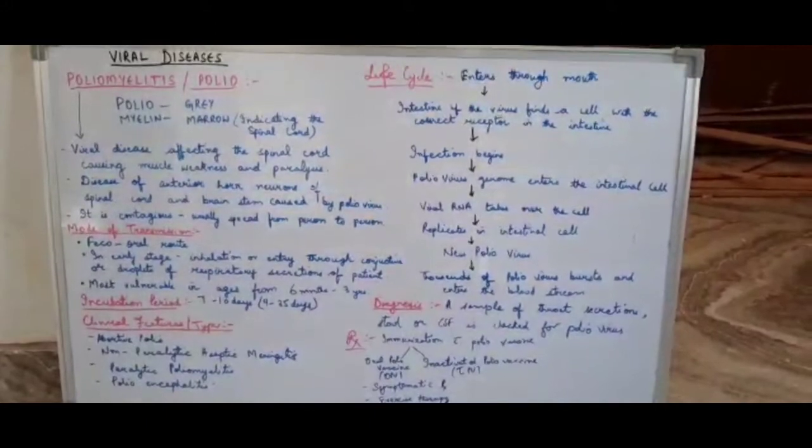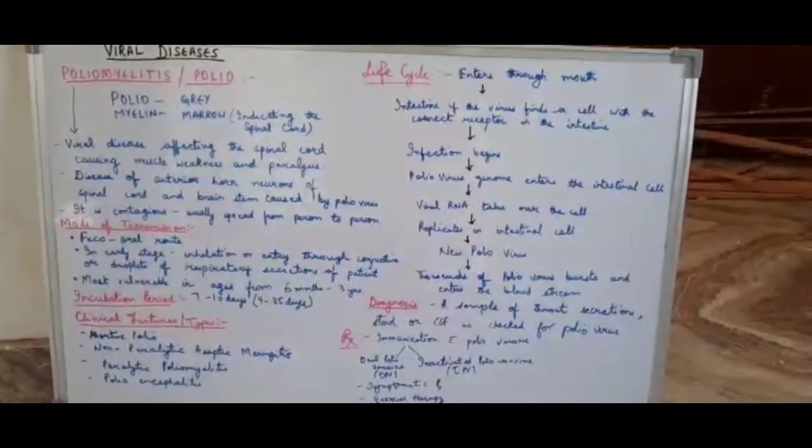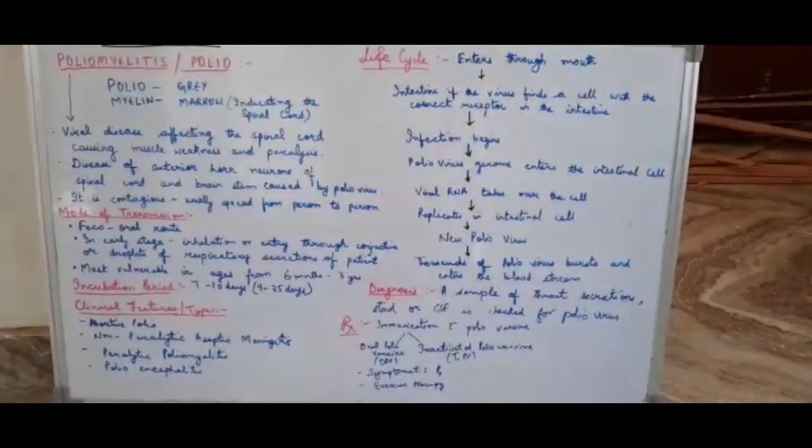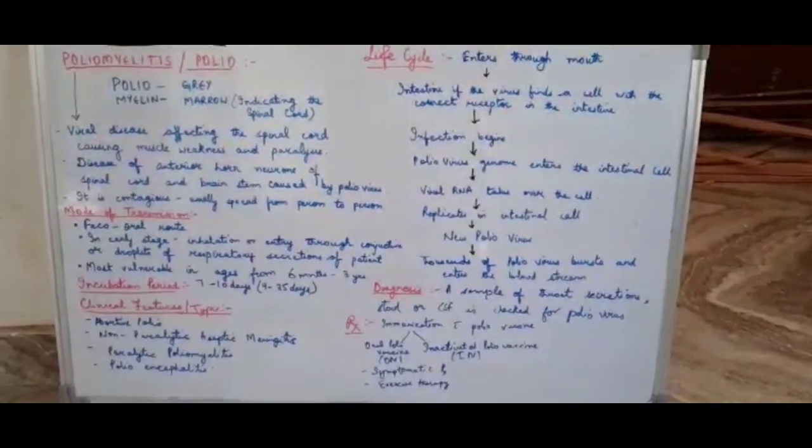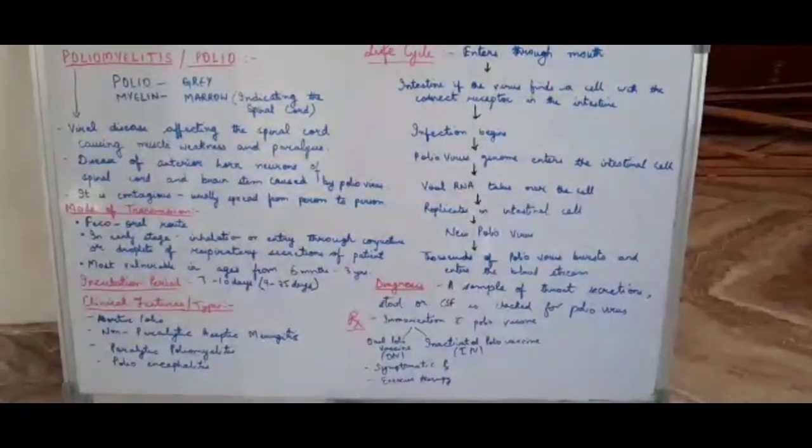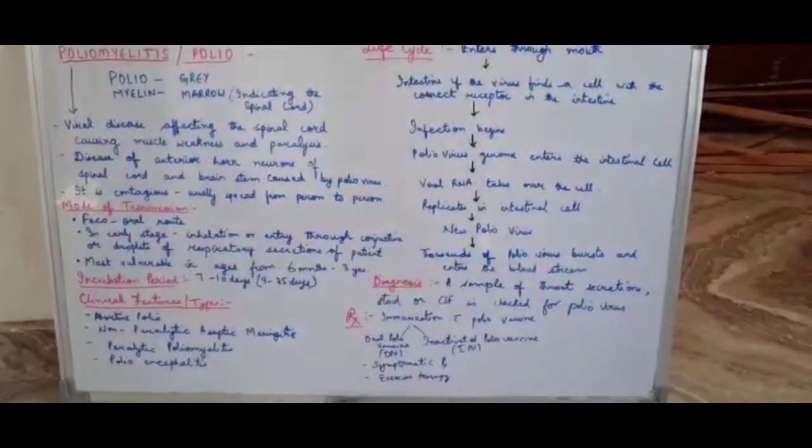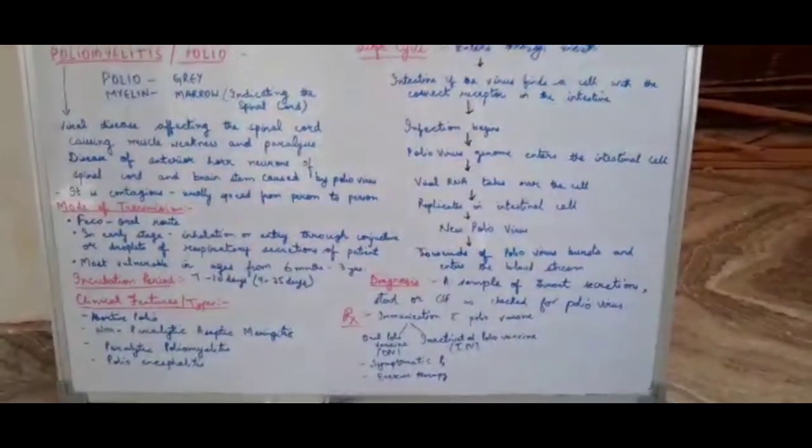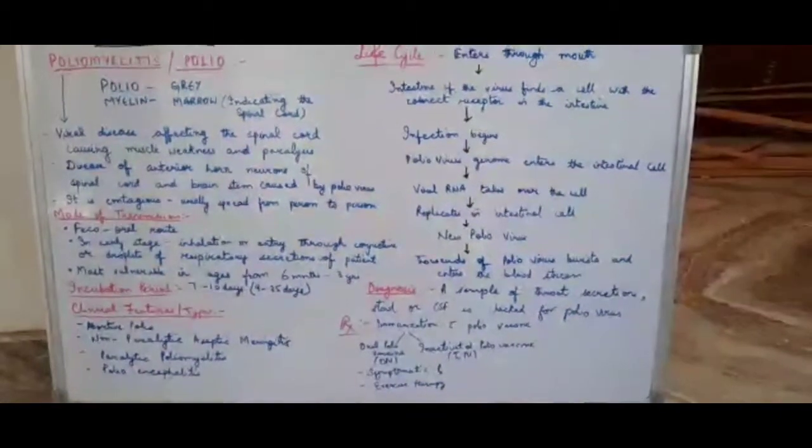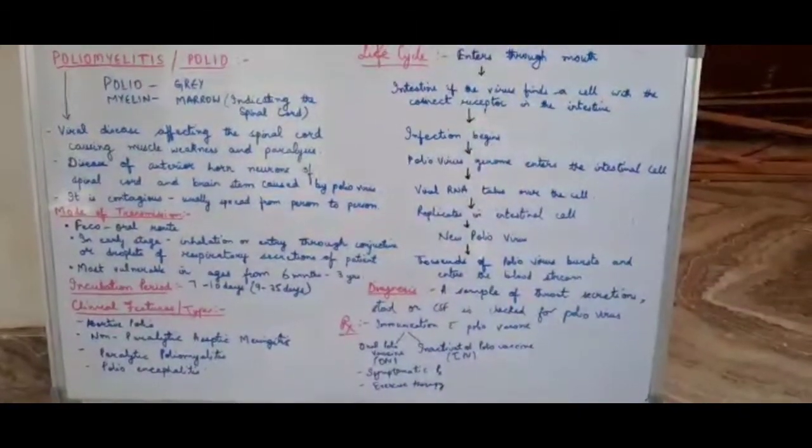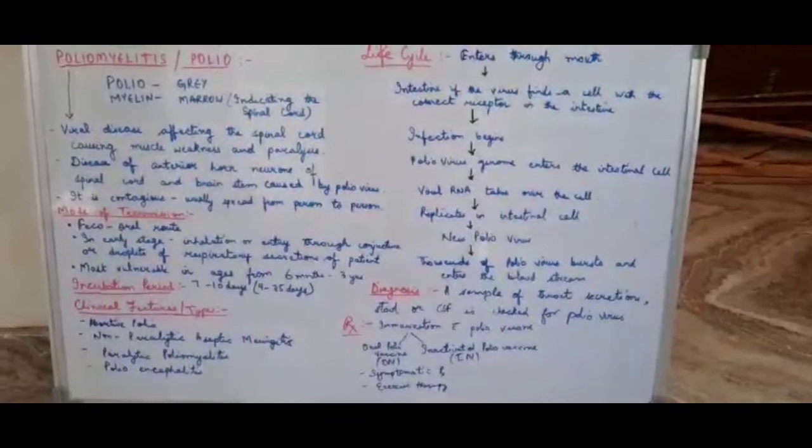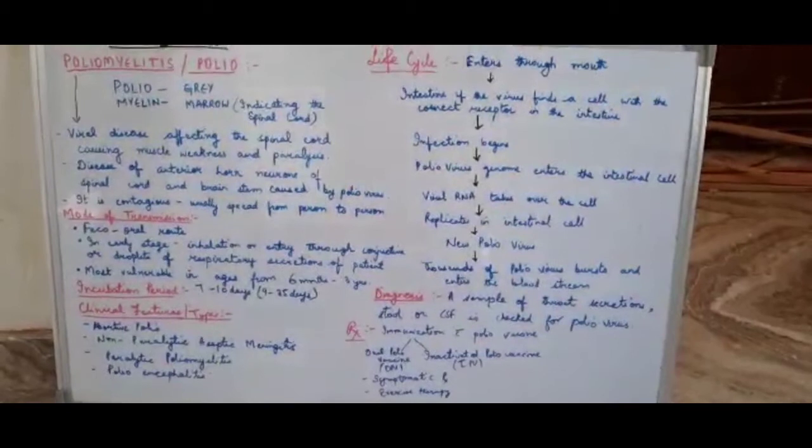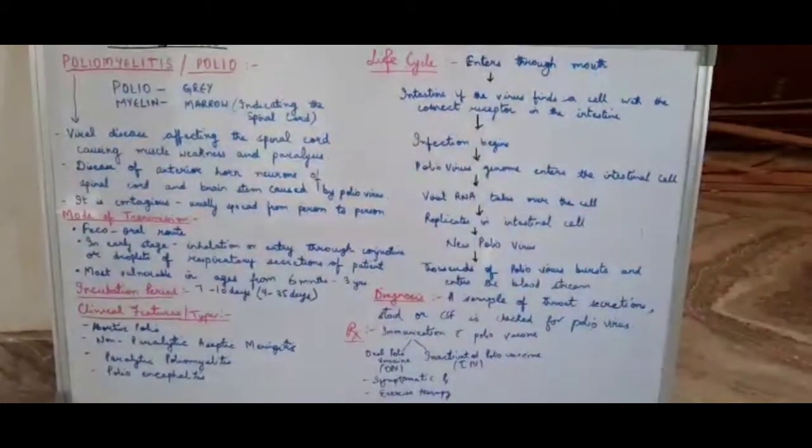Poliomyelitis is a viral infection caused by the polio virus. It is basically an infectious disease of the human alimentary canal which affects the brain, spinal cord, and nerves, ultimately resulting in paralysis. Polio does not always cause paralysis, but it affects the spinal cord and causes muscle weakness and paralysis. This is a disease of the anterior horn cells of the spinal cord and brain stem which are attacked by the polio virus.